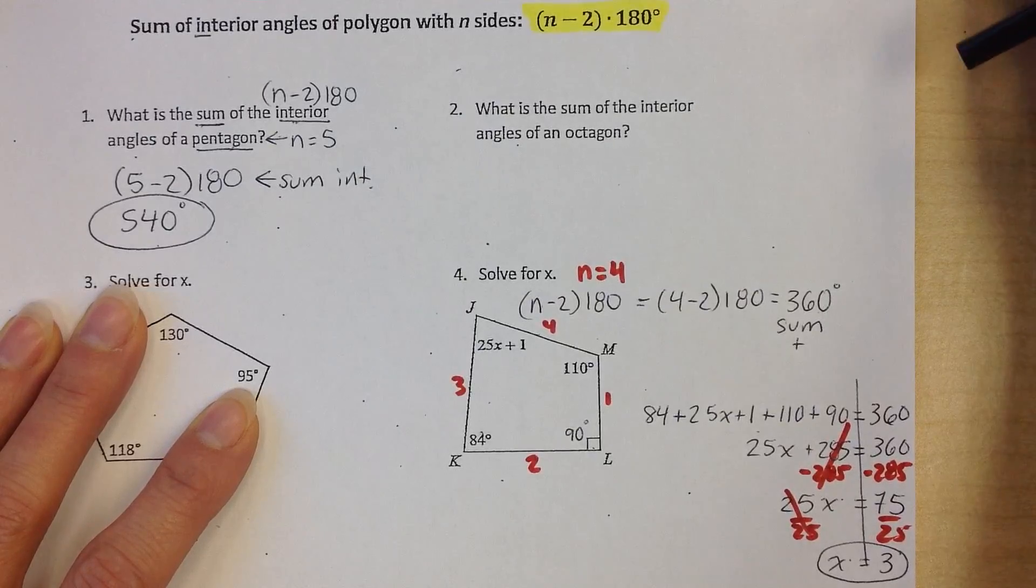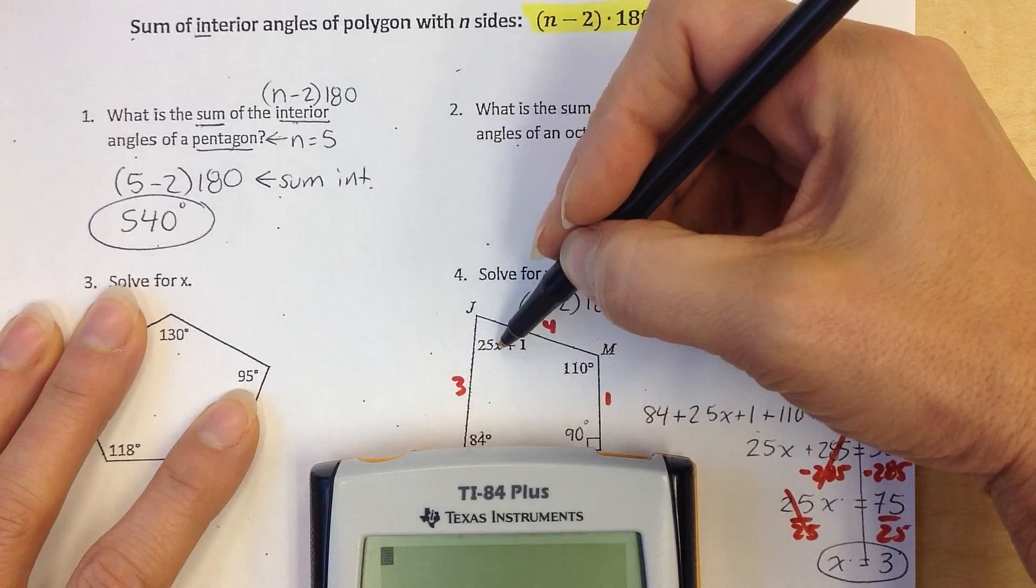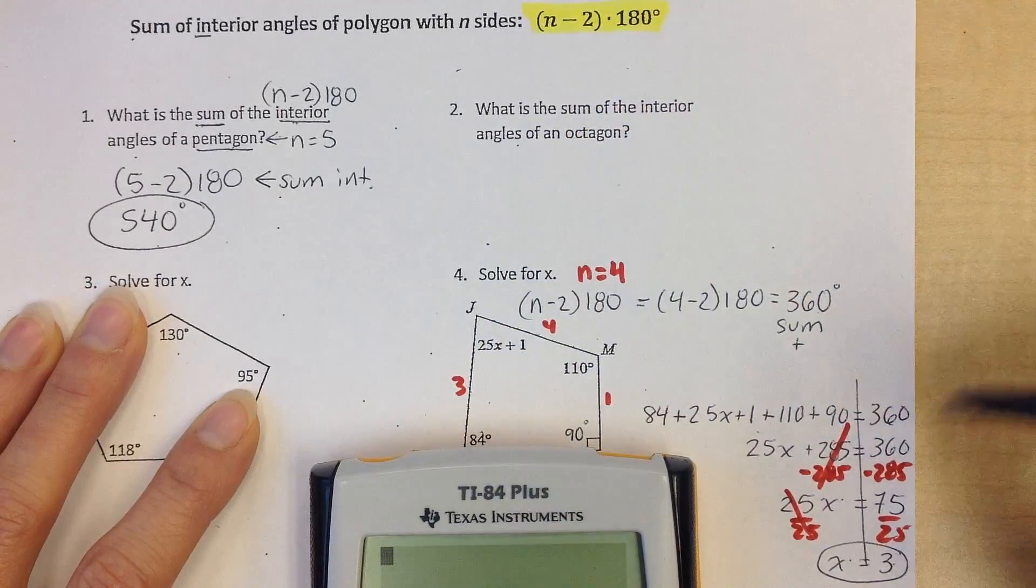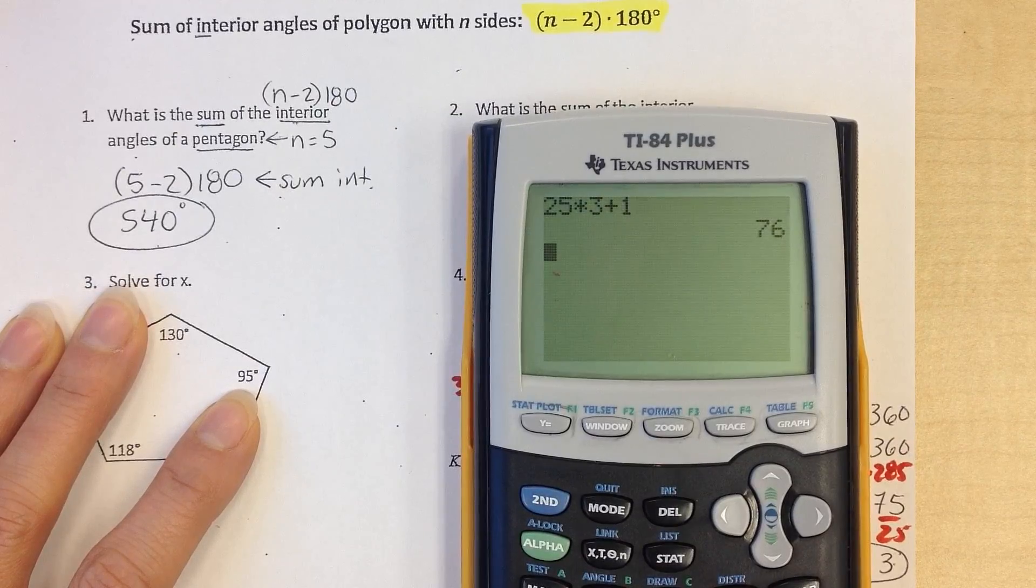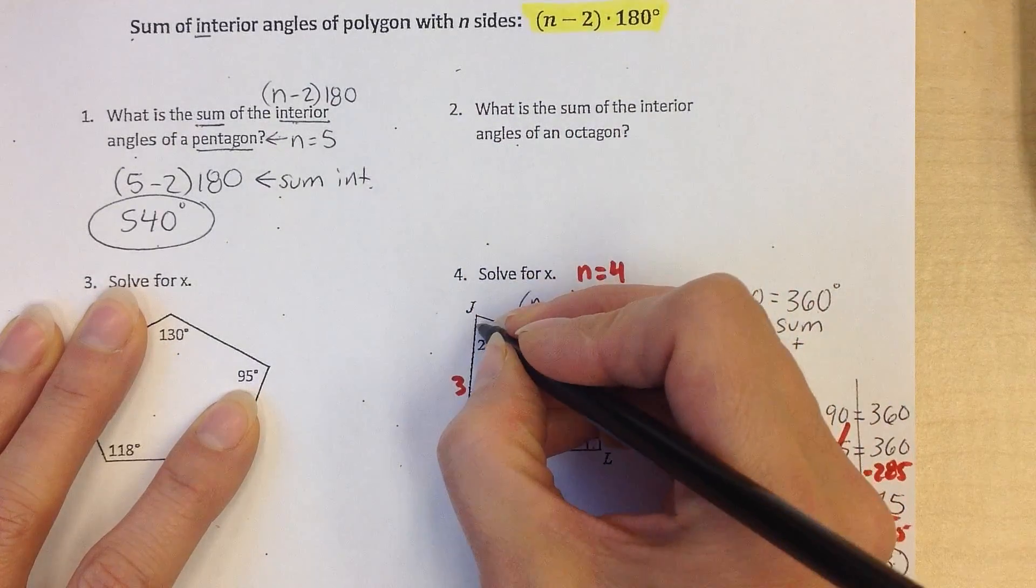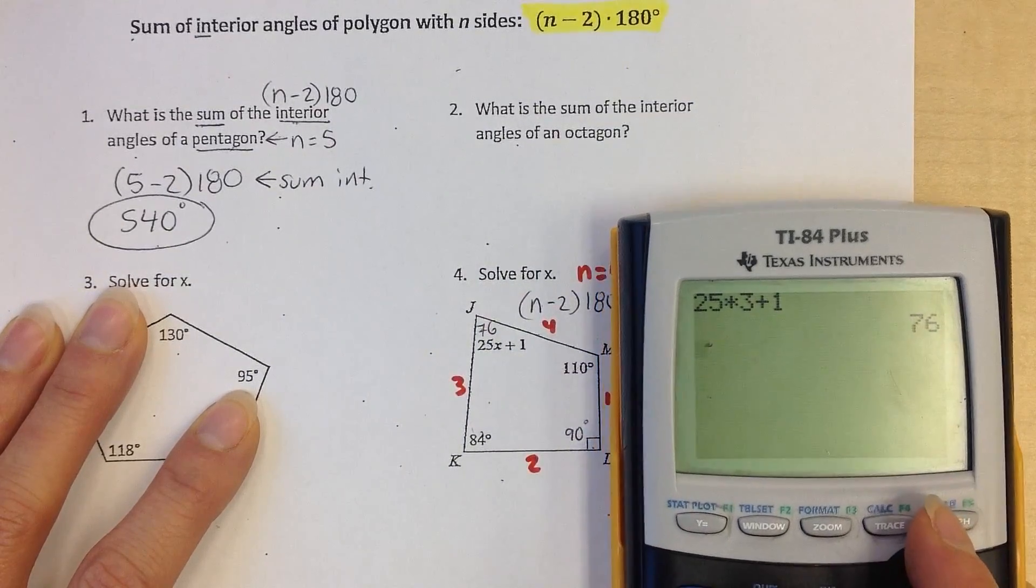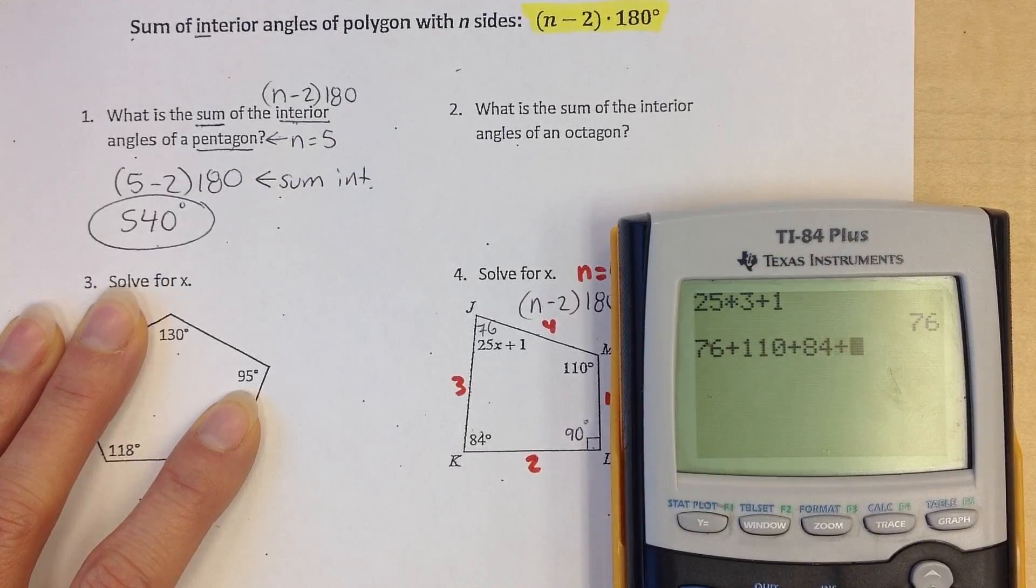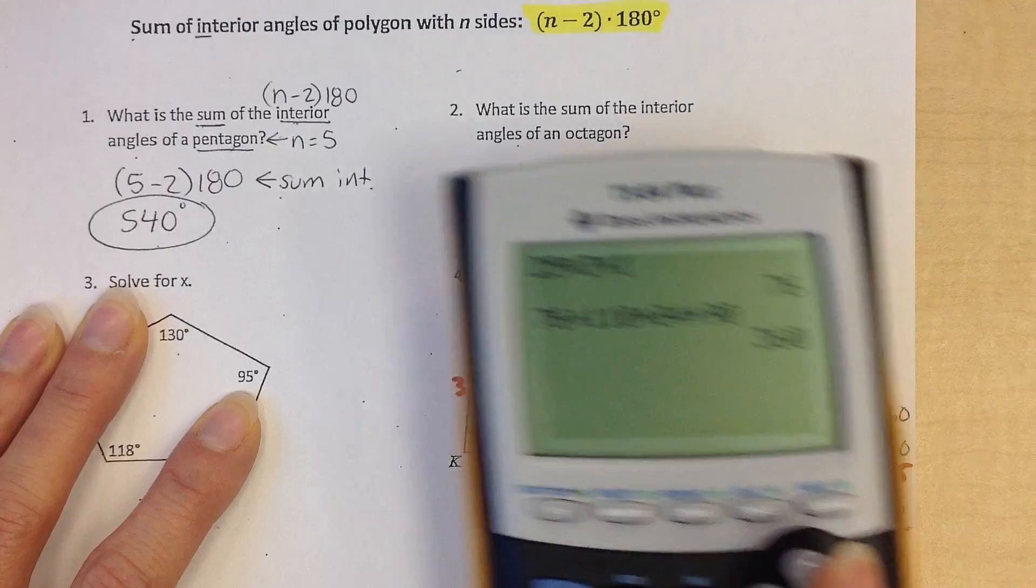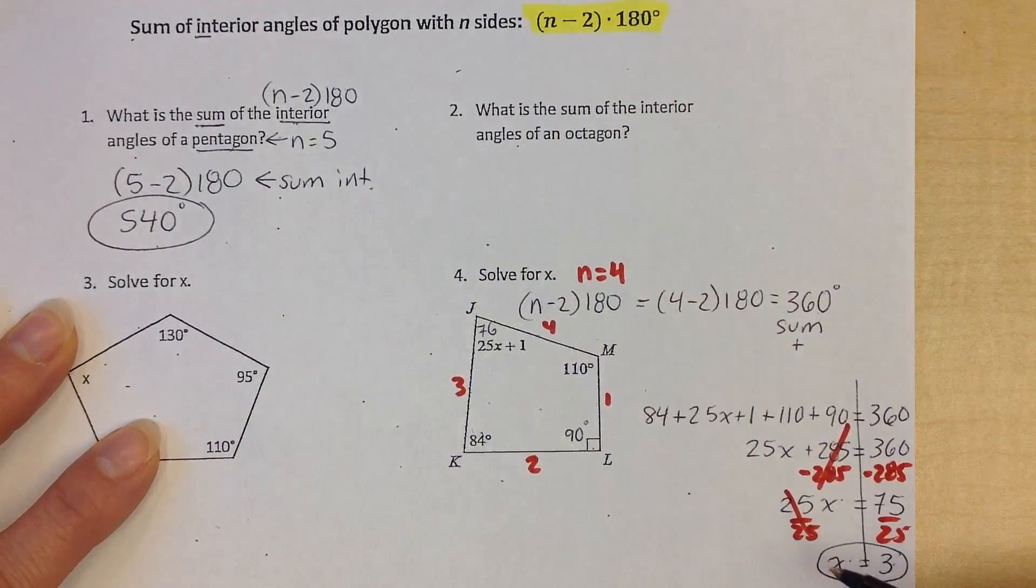You know, there's no reason to be wrong if you can check it. Okay, so 25 times, now I know x is 3, so 25 times 3 plus 1 makes this angle 76. And now I have the numbers at all four angles, so I can make sure that those add up. 76 plus 110 plus 84 plus 90, that those in fact add up to 360, which they do. So I know my solution for x is right.